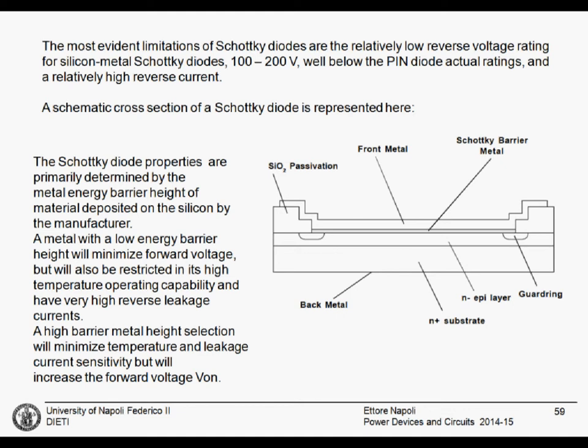This is the schematic of the Schottky diode. It is very simple: you have the passivation, the guard rings, the Schottky barrier metal, and the AP layer and the substrate. The properties of the Schottky diodes are primarily determined by the metal energy barrier height of the metal-to-semiconductor junction.